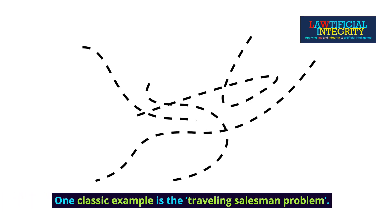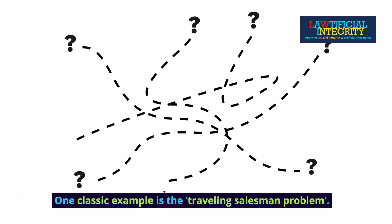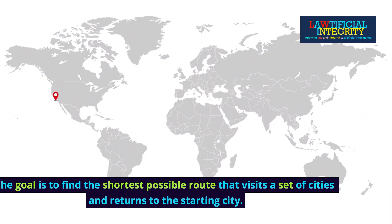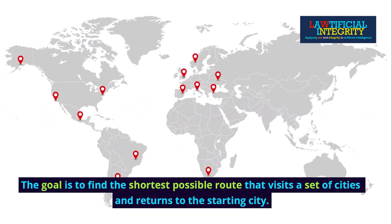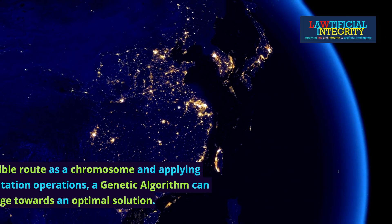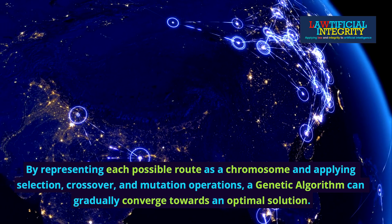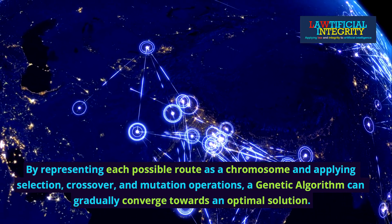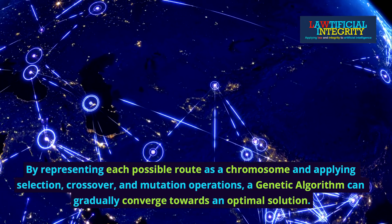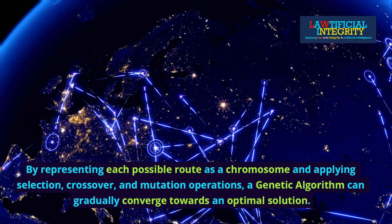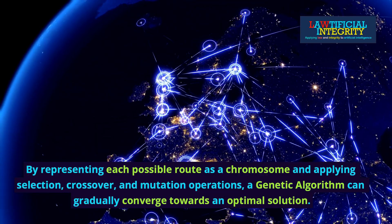One classic example is the traveling salesman problem. The goal is to find the shortest possible route that visits a set of cities and returns to the starting city. By representing each possible route as a chromosome and applying selection, crossover, and mutation operations, a genetic algorithm can gradually converge towards an optimal solution.